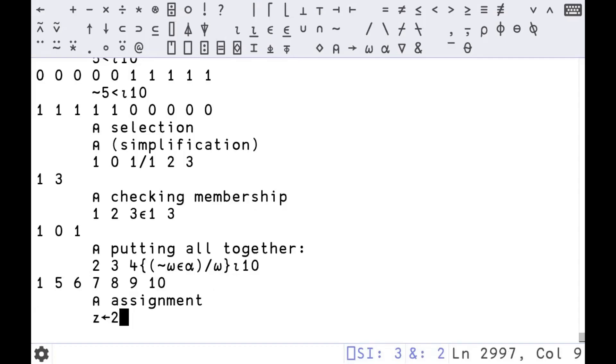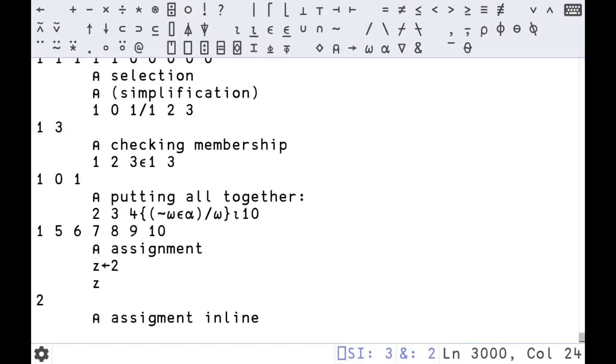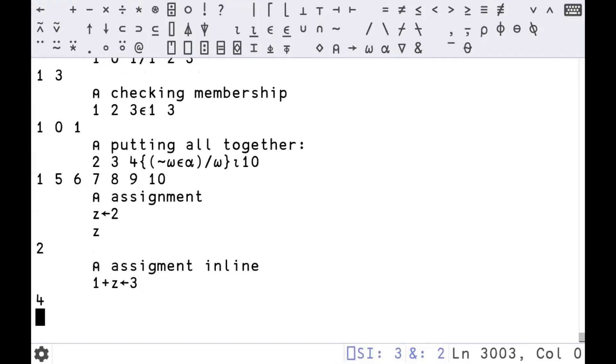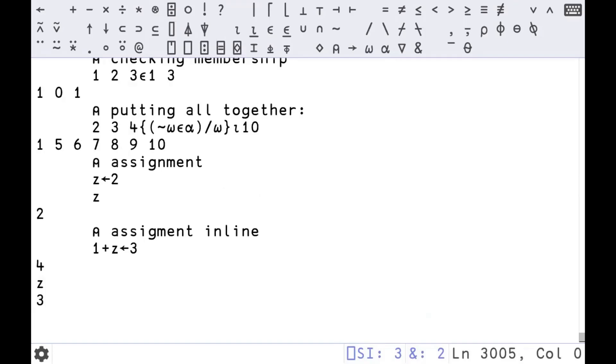Quickly, the notation for assignment is the left arrow. So we're assigning to Z. We get Z back whenever we use Z, we get two back. You can do this inline just to make things even terser. So this statement will make Z equal to three and then add one to it, returns four. But we can see Z is three.